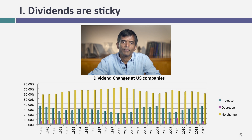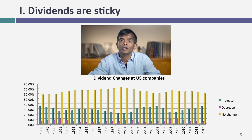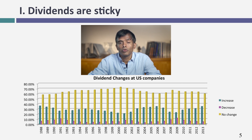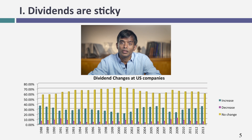Most companies are reluctant to change dividends. In the U.S. and Europe, companies tend to be sticky about dollar or euro dividends — absolute dividends. In Latin America, they tend to be sticky about dividend payout ratios — the percentage of earnings you pay in dividends. So in Latin America, companies will pay out 30% of their earnings as dividends and try to stick as close as they can to that number. Also, if you look only at the companies that change dividends, in every single year the number of companies that increase dividends vastly outnumbers the companies that decrease dividends.